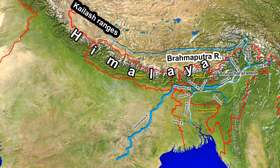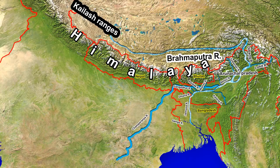The Brahmaputra rises in the great Chema Yungdung glacier in the Kailas range of the Himalayas. It flows eastwards in southern Tibet for about 1800 km and then turns south and south-west near Namcha Barwa. It enters India west of Sadia town in Arunachal Pradesh, where it receives the Dibang and the Lohit.